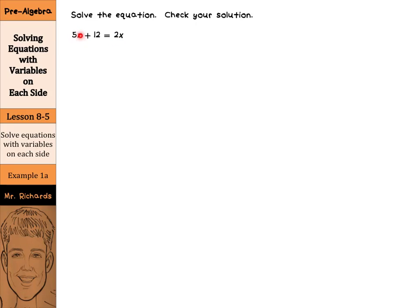I would actually move this 5x over to the right side of the equation. The way we are going to do that is to subtract 5x from both sides of our equation. Because 5x minus 5x is just zero, it cancels, and we're left with 12 equals — well, 2x minus 5x is negative 3x.